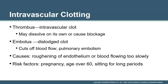Intravascular clotting occurs when we have a thrombus, which is a clot. An embolus is a dislodged clot. Causes include roughing of the endothelium, blood flowing too slowly, or risk factors such as sitting for too long. A pulmonary embolus can occur in a pilot or someone on a very long flight — if they cannot recirculate their blood and then suddenly move, they can create a thrombus, dislodge the clot, and die from it.